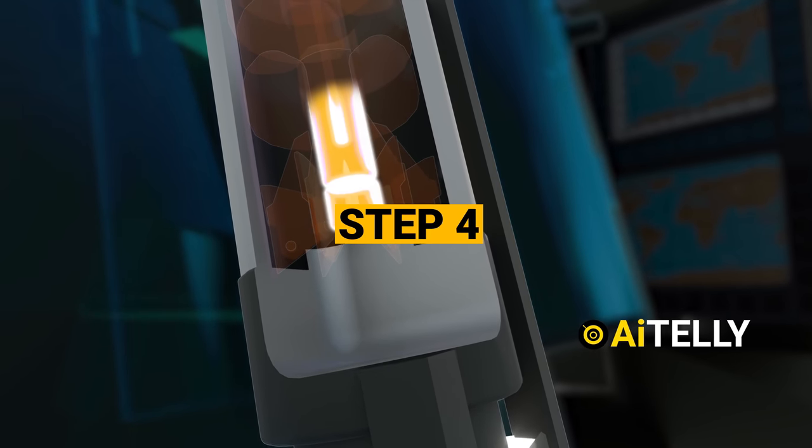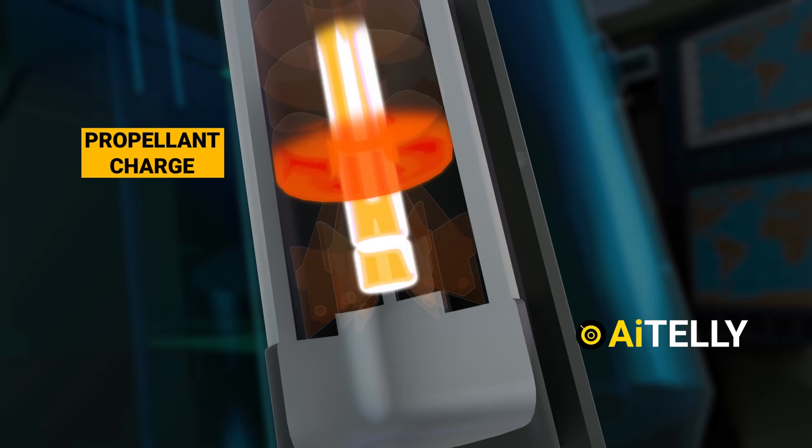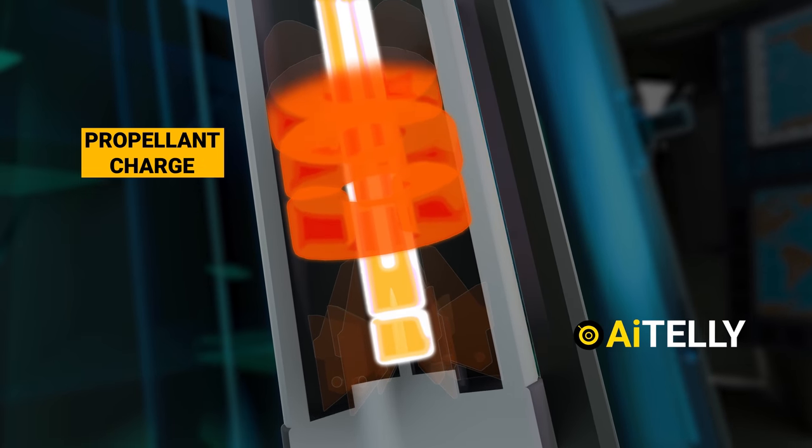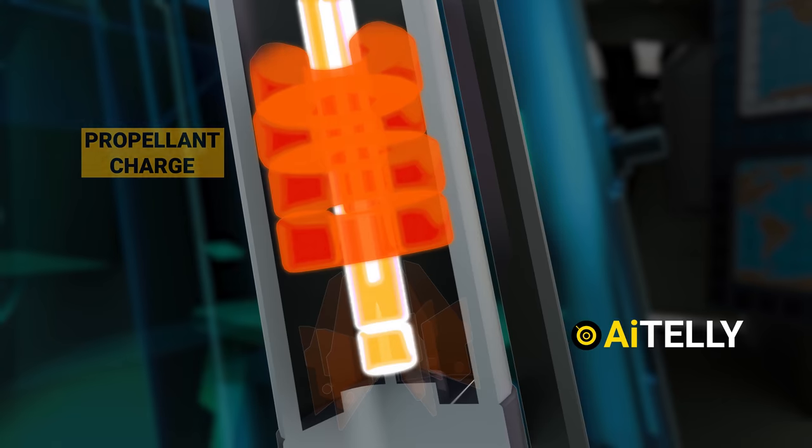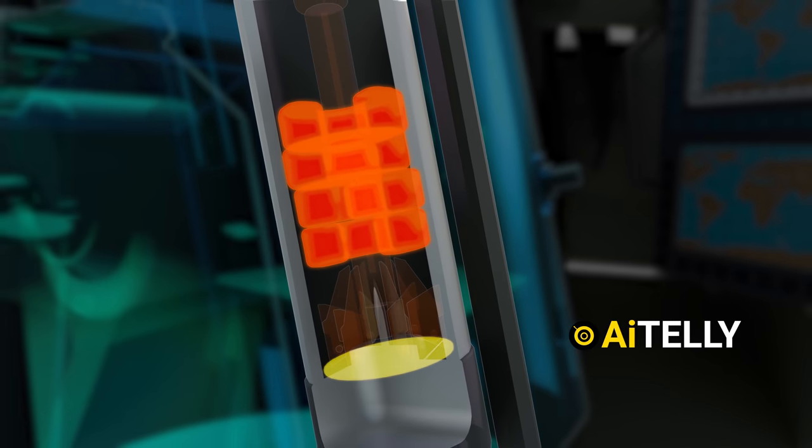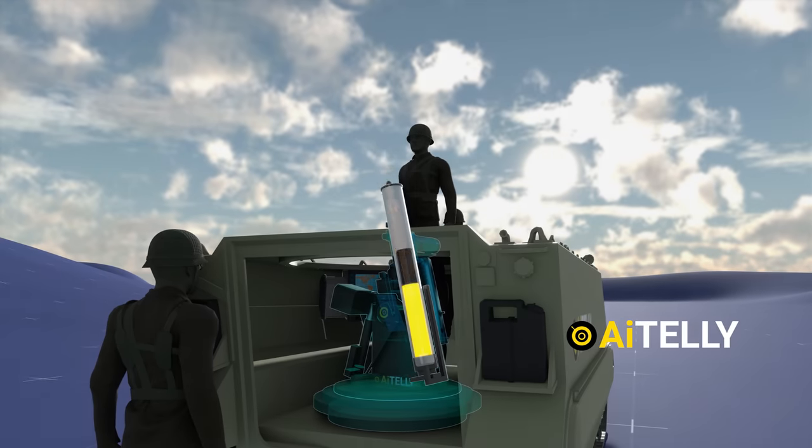Step 4: This in turn triggers the propellant charge, as discussed earlier. The greater the number of charges, the farther the round will travel. The propellant charge forces the Iron Sting out of the launcher.